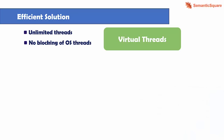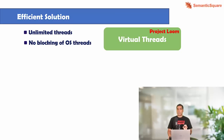Virtual threads were developed as part of Project Loom and were released as a permanent feature in Java 21, after being in preview mode in the prior two releases in Java 19 and Java 20. They are a major enhancement of Java and they help in achieving higher throughput.